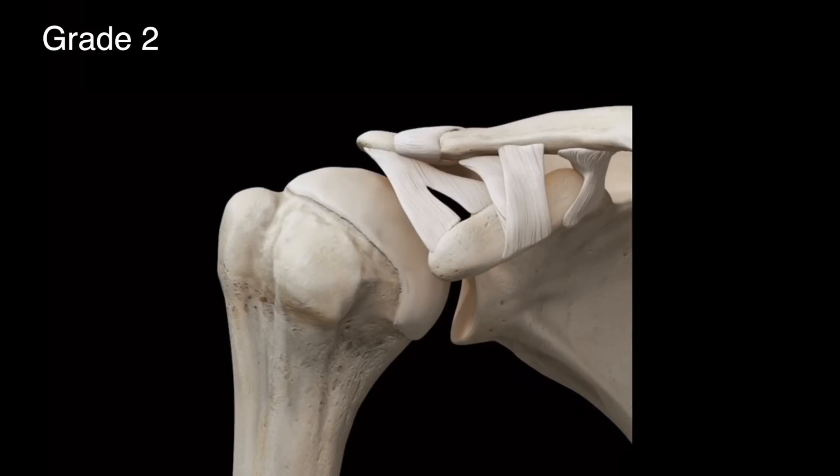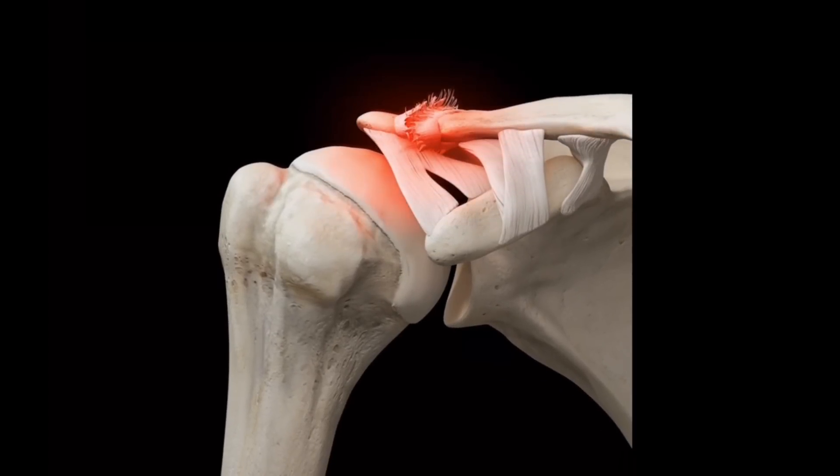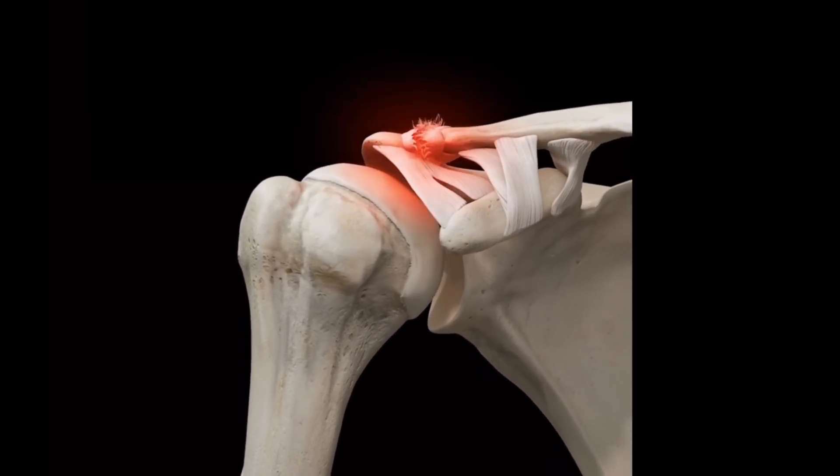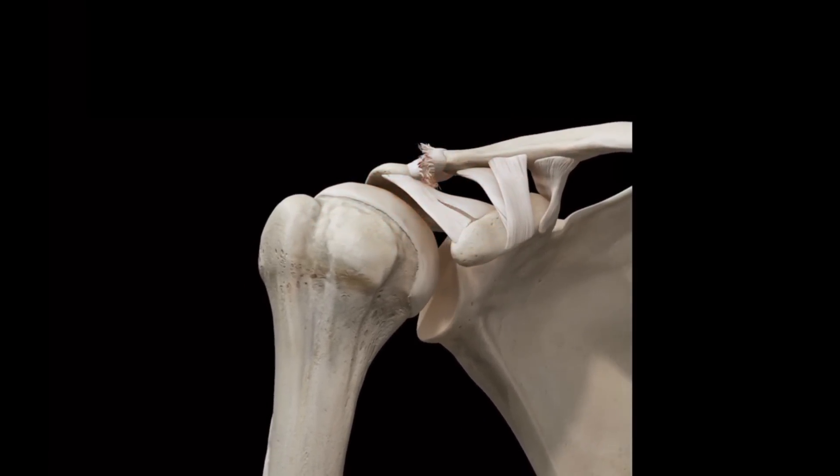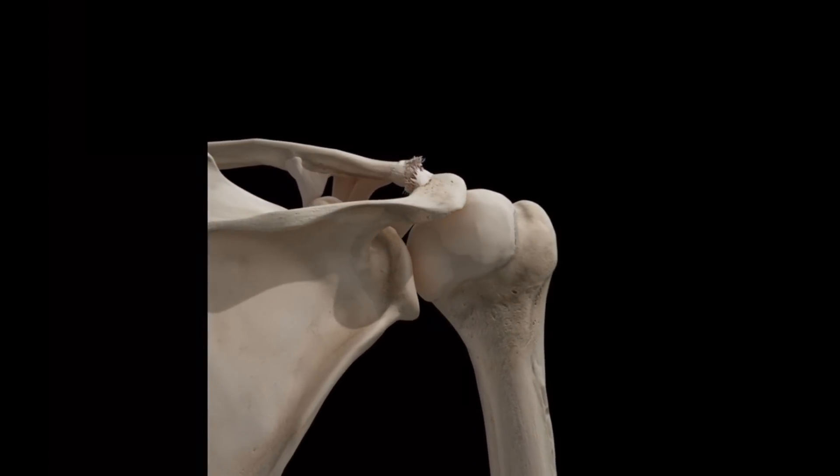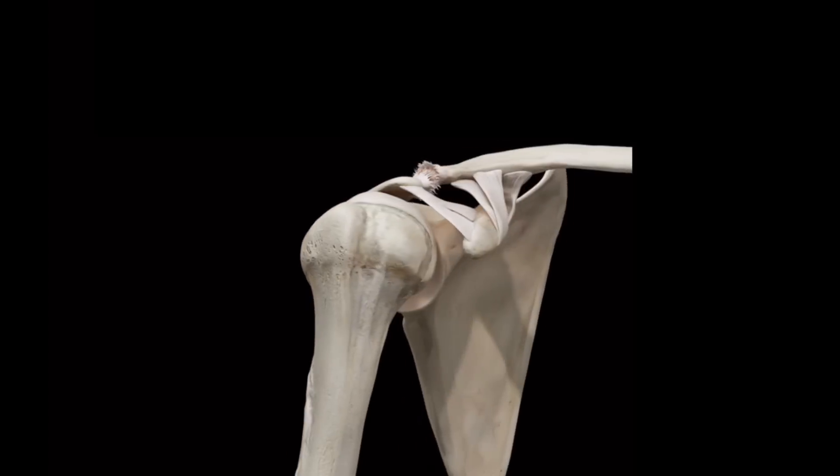In a grade 2 injury, the AC joint is completely disrupted as the joint capsule and surrounding ligaments are torn through. Often in a grade 2 injury, there is a small drop in the height of the shoulder as this stability has been compromised. When the ligaments of the AC joint are torn, the player may be out for 4 to 6 weeks.